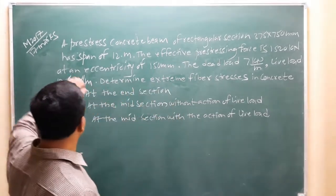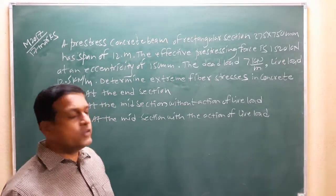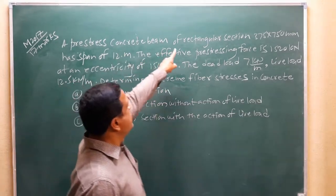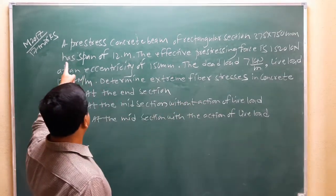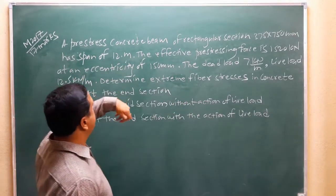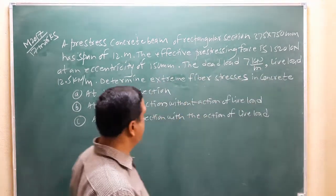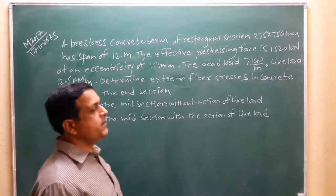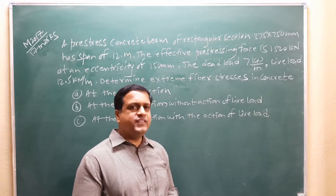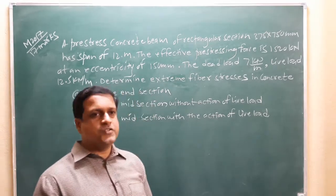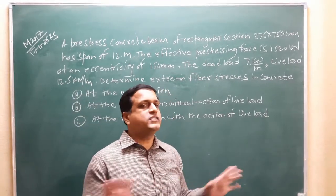I will read this question. This question was asked in May 2017 for 17 marks. Pre-stressed concrete beam of rectangular section 375 by 750 mm, span of 12 meters. The effective pre-stressing force is 1520 kN and an eccentricity of 150 mm. Eccentricity is directly given. So if the word eccentricity is present in the question, you have to assume that eccentricity is constant throughout the beam.